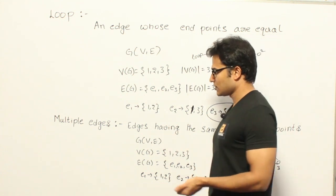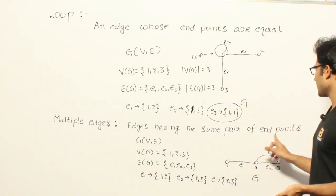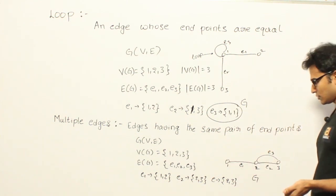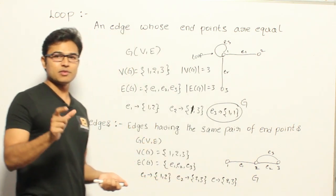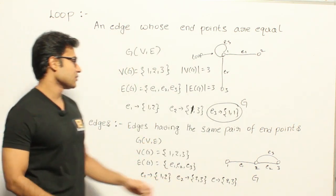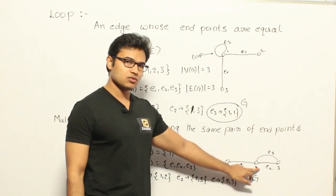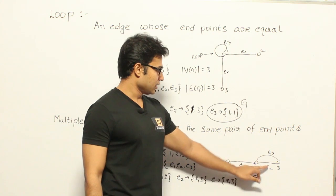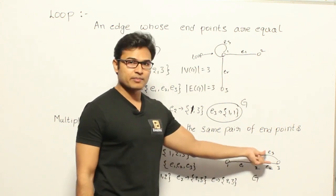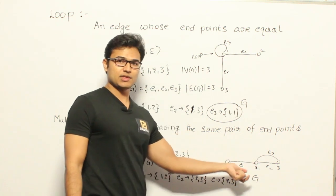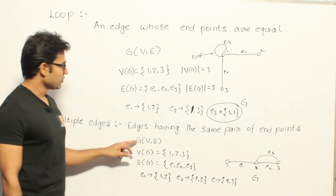The other type of special edge is multi-edges. Edges having the same pair of endpoints are called multi-edges, meaning there can be more than one edge between two vertices. If a graph has multi-edges it is called a multigraph.